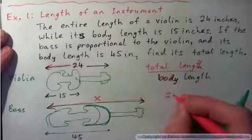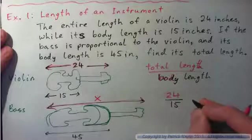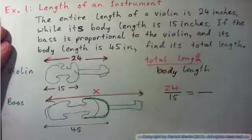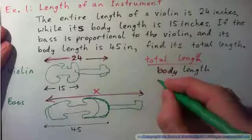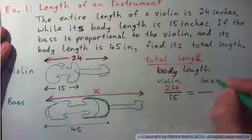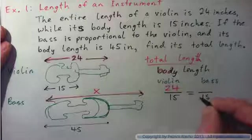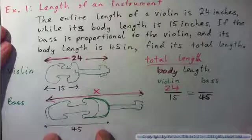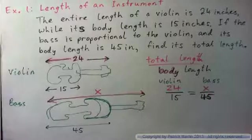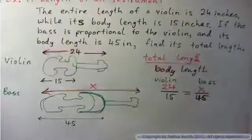So, total length for a violin is 24, which corresponds to a body length of 15. Now, that is equal to... So this is the violin, right? And then we're going to figure out what the bass is. The bass has a body length of 45, and a total length of unknown. So x, right? Or n, or a, or whatever. You can use any letter you like. I guess I use x a lot. It doesn't matter what you use.